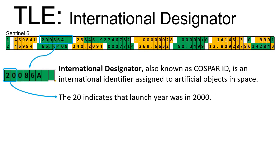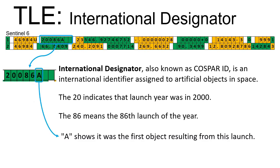The 20 indicates that the launch year was in 2020. The 86 means the 86th launch of the year. A means that it was the first object resulting from this launch.